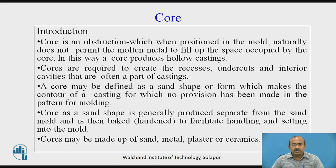Let us go with the introduction of the core. A core is an obstruction which, when positioned in the mold, does not permit the molten metal to fill up the space occupied by the core — in this way, a core produces hollow castings. Cores are required to create recesses, undercuts, and interior cavities that are often a part of castings. A core may be defined as a sand shape or form which makes the contour of a casting for which no provision has been made in the pattern or molding. Cores may be made up of sand, metal, plaster, or ceramics.